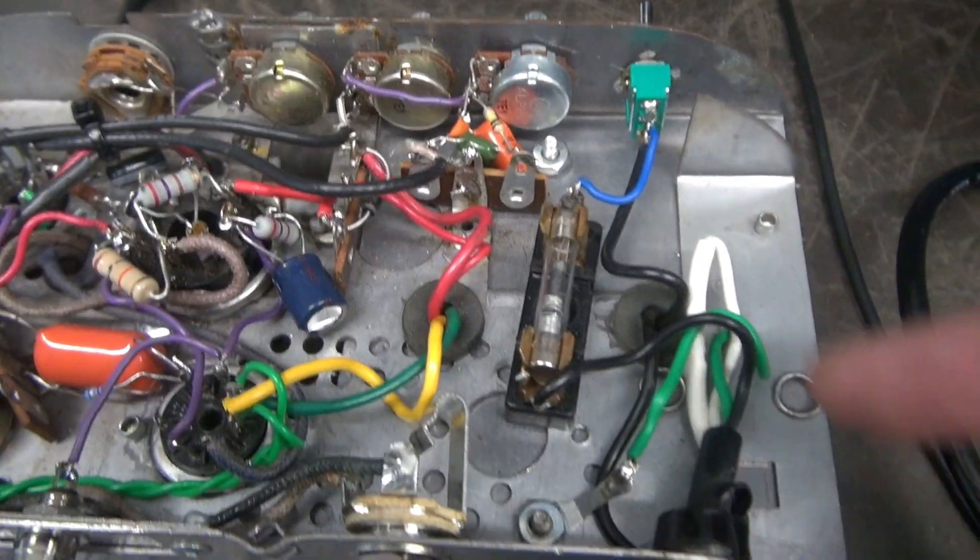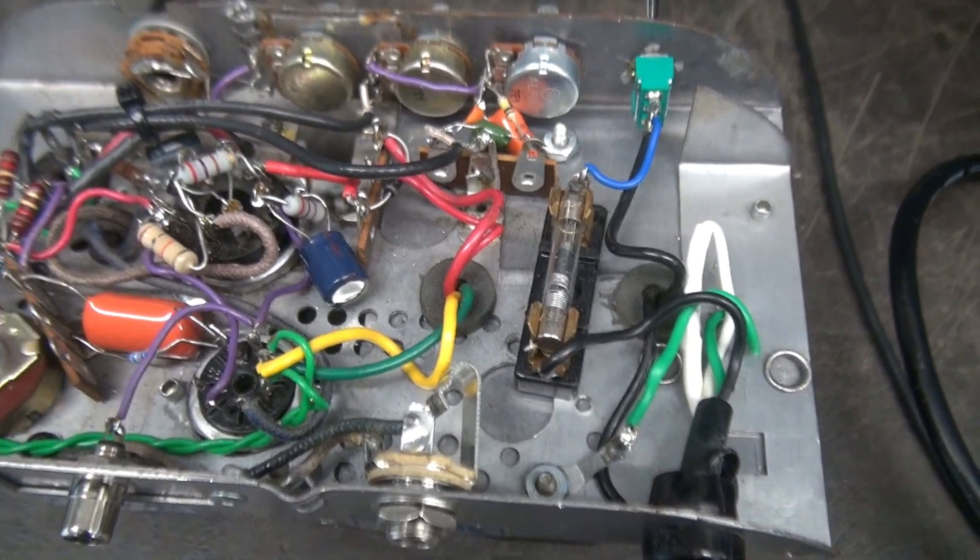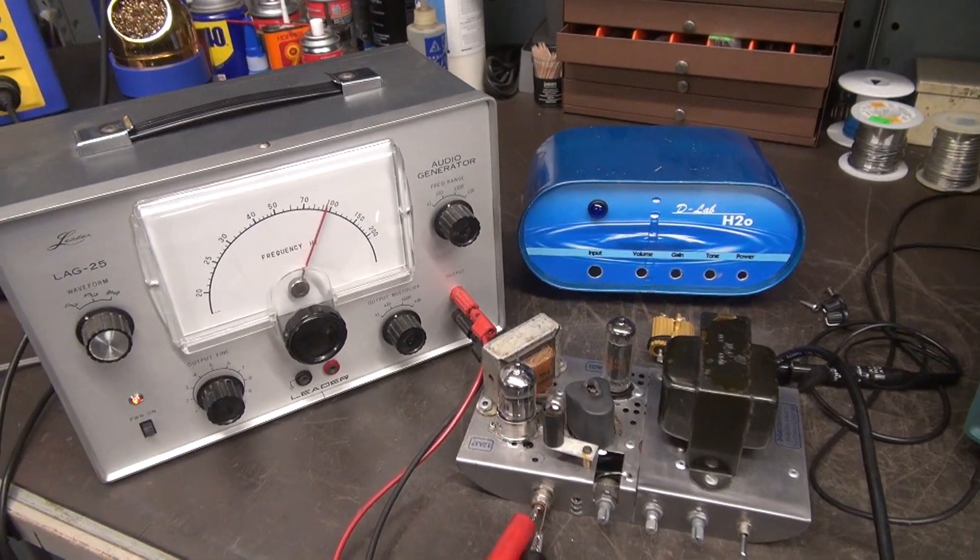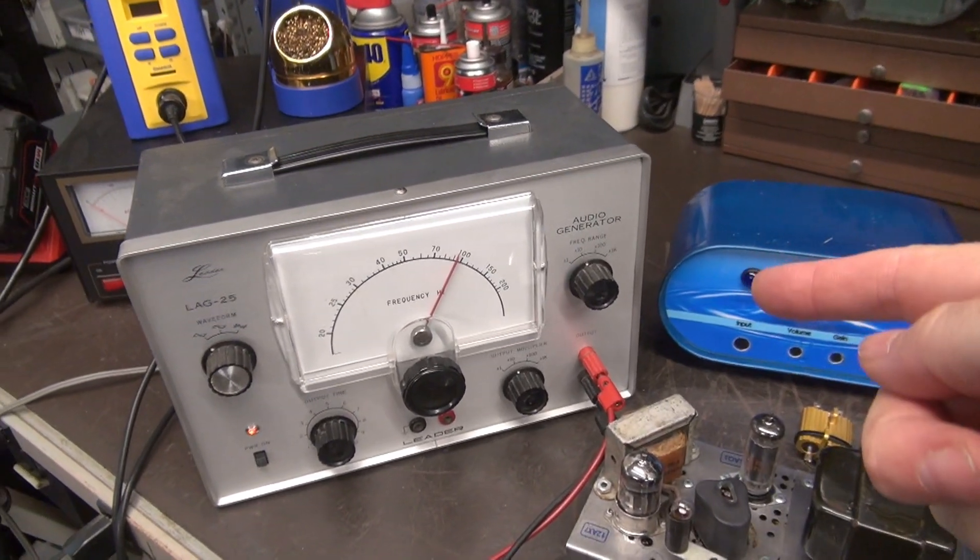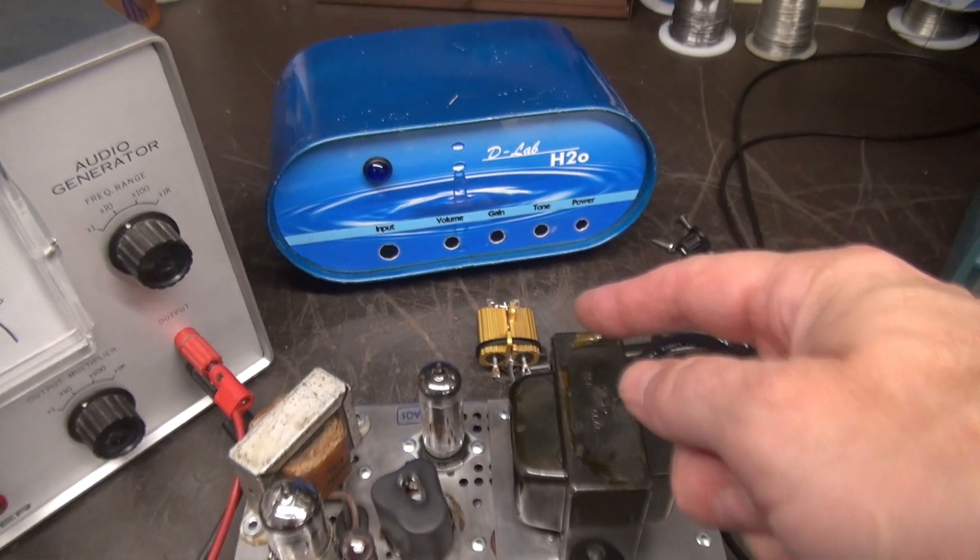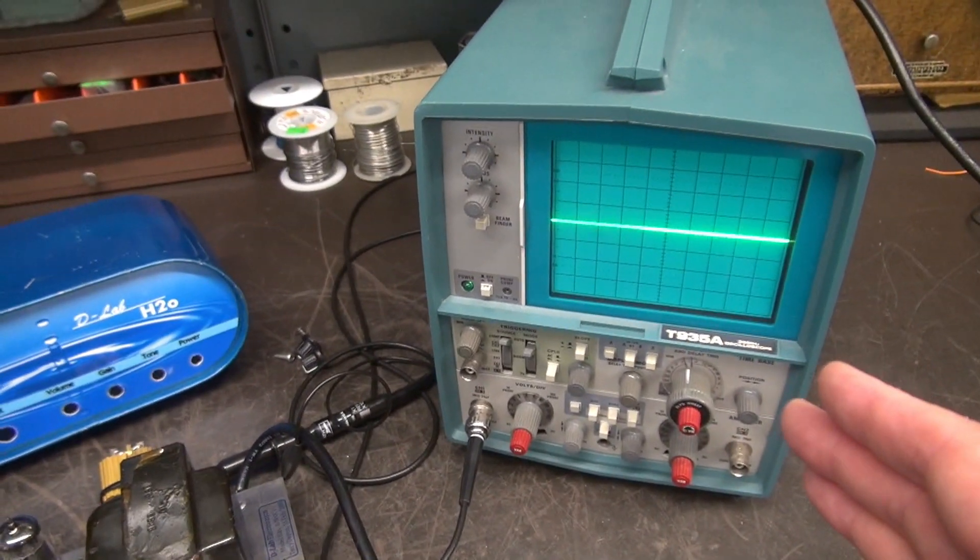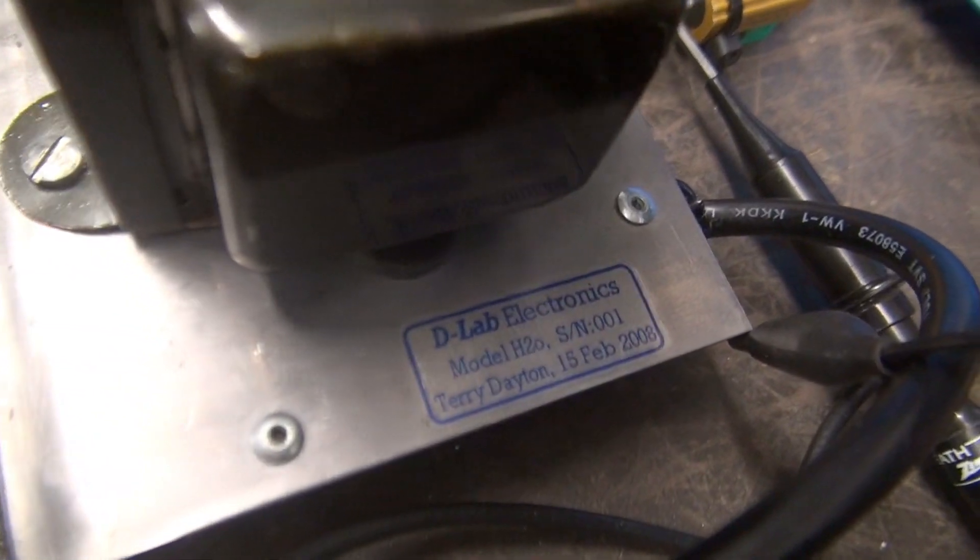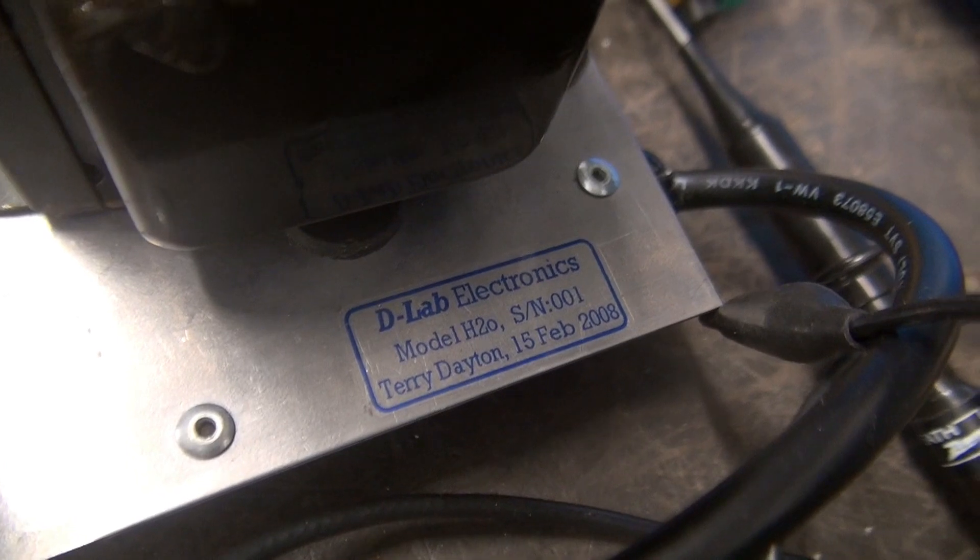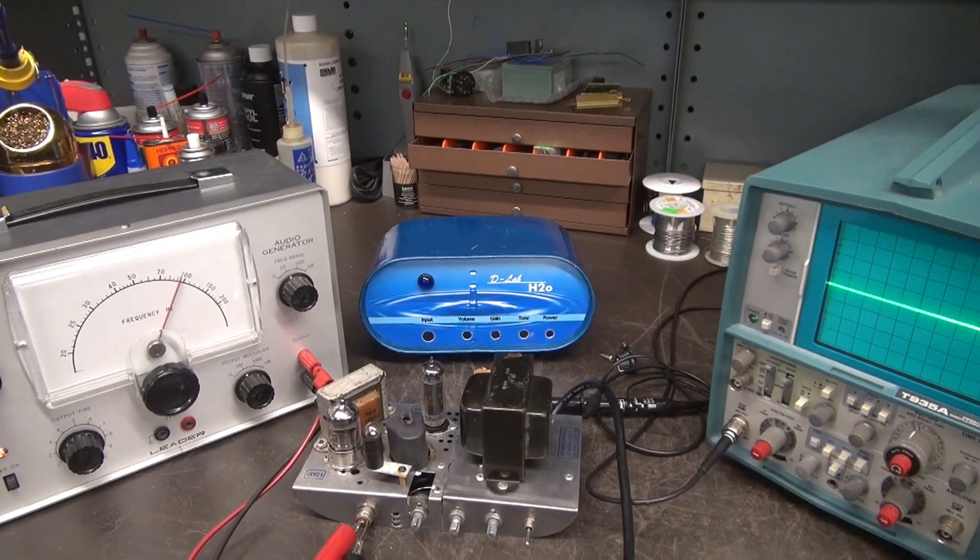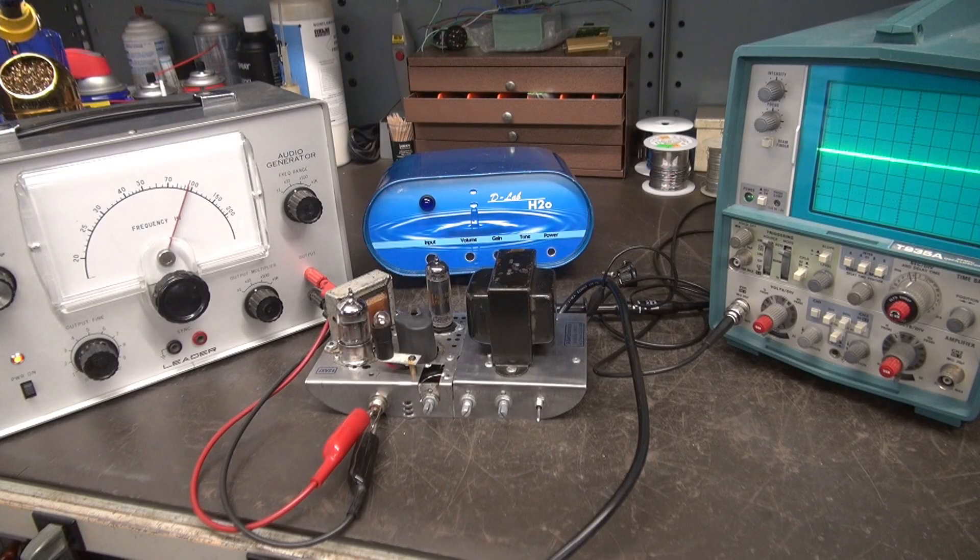All right, getting ready for the initial test after replacing the filter cap assembly. I've got my Leader audio generator, have a dummy load hooked to the unit, oscilloscope to monitor the output. And take a look what I just discovered, it still had the ID tag on it. So yep, she's a 2008 model, back when the economy was great. Surprise I sold it. All right, ready to test it. I'm going to kill the lights.